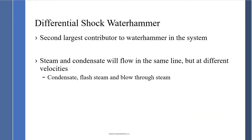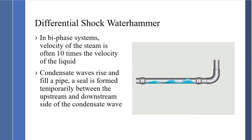Differential shock water hammer is the second largest contributor to water hammer in the system. Steam and condensate flow in the same condensate line at different velocities. The condensate line carries condensate, flash steam, and blow-through steam from failed steam traps and bypass valves. When velocities exceed 4,500 feet per minute in the condensate lines, a wave is created. When that wave seals at the top and bottom and hits an elbow, it causes a violent reaction called differential shock water hammer.